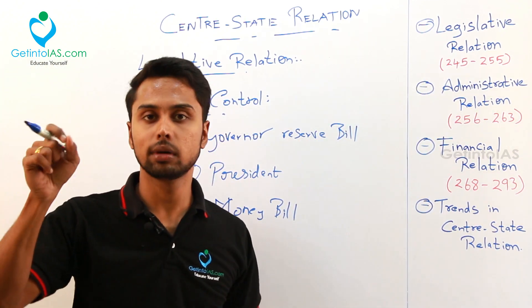Next, there are three important lists. One is the Union List, next is the State List, then the Concurrent List, and something called residual power. This list applies across all three relations — legislative, administrative, and financial. The Union List has 99 items, the State List has 61 items, and the Concurrent List has 52 items. You can see them in your polity book — just have an idea, don't waste time mugging up all items.